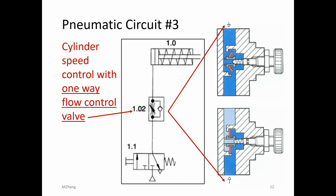Let's look at the next example. For this example, I want to have some speed control. Not only do I want to extend and retract the cylinder, I want to have it slowly extend or slowly retract, depending on the application. In order to do that, we have to add more components. The component we use for this purpose is called a one-way flow control valve.